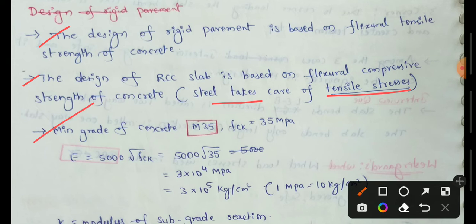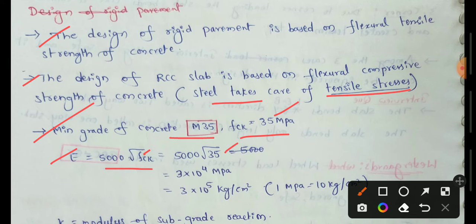The minimum grade of concrete is M35, so FCK is equal to 35 MPa. E means Modulus of Elasticity of Concrete, equal to 5000 into the root of FCK. With FCK equal to 35 MPa, this gives 5000 into root of 35, which equals 3 × 10⁴ MPa. Since 1 MPa equals 10 kg per cm², this equals 3 × 10⁵ kg per cm².